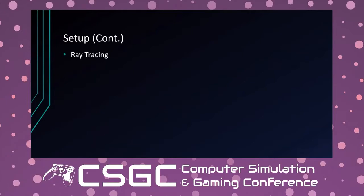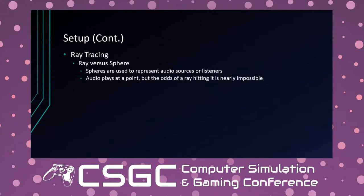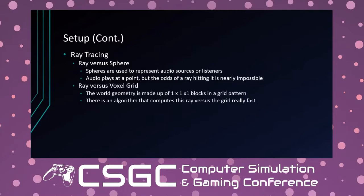For ray tracing I needed ray-versus-sphere intersection, since spheres represent audio sources and listeners. Audio plays at a point in a game, and the odds of a ray hitting a point perfectly are nearly impossible, so spheres give it volume so we can collect data. I also needed ray-versus-voxel-grid: the world geometry is made of 1×1×1 blocks in a grid pattern, and an existing algorithm computes ray-versus-grid very efficiently, which is why the geometry is grid-shaped.